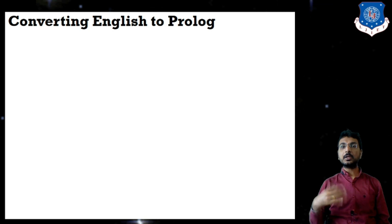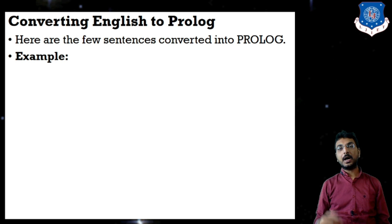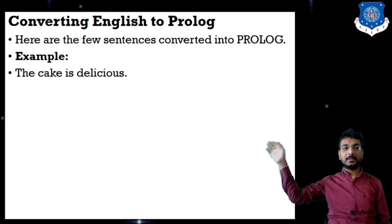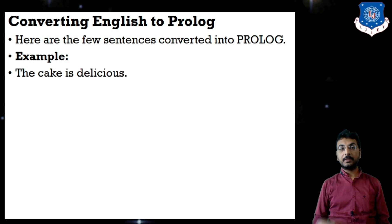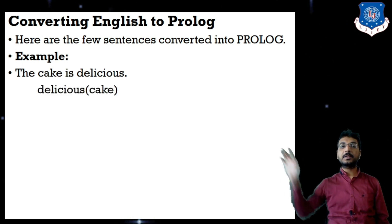Let us understand how we convert English sentences to Prolog language. In previous chapters on predicate logic, we studied how to convert statements to proposition or predicate logic. Similarly, English language statements will be directly converted to Prolog language. For example, 'The cake is delicious' — the noun is cake and delicious is the adjective, so that statement can be written as: delicious(cake).